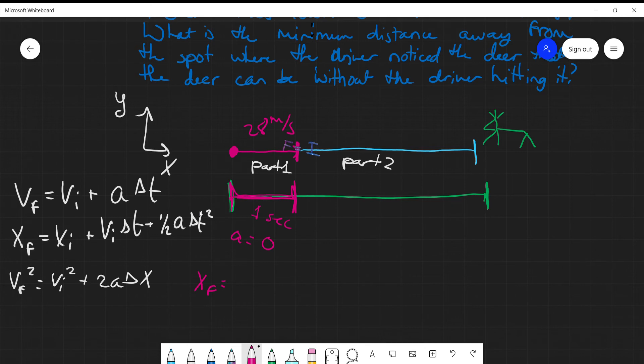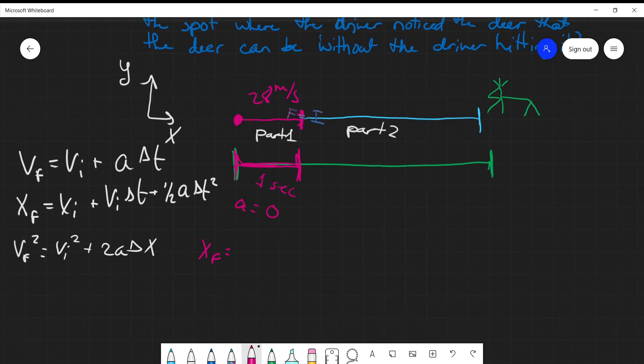So we have xf, because that's what we don't know, equals zero because our scenario starts where x equals zero. So our initial position is x equals zero. And this becomes plus vi, so 28 times t which is 1, plus one half a which is 0 times 1 squared. This whole unit cancels out so we're left with xf equals 28 meters. And the reason why this one was kind of painless to use is because a was zero.